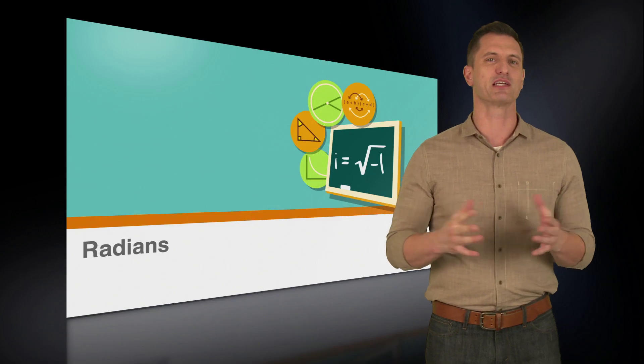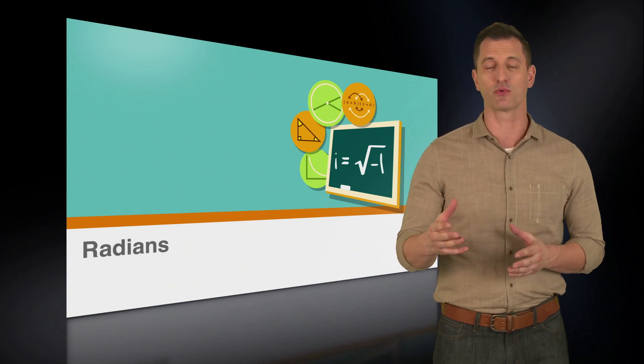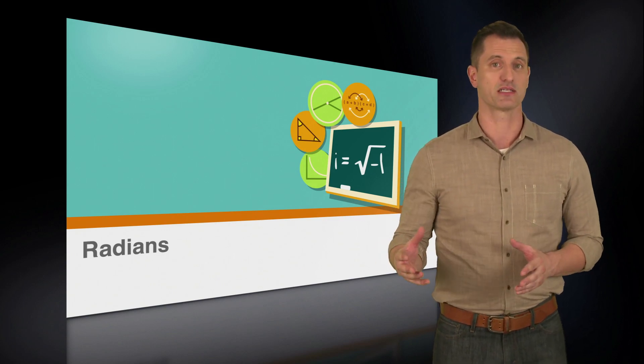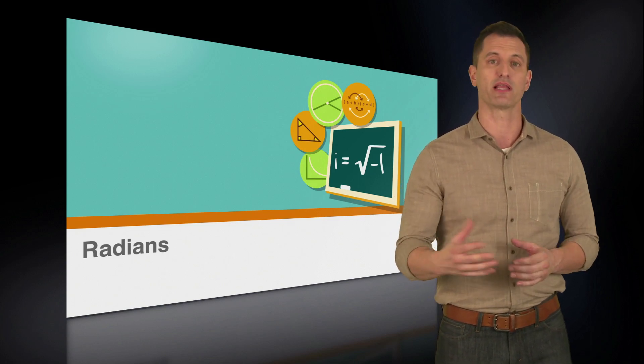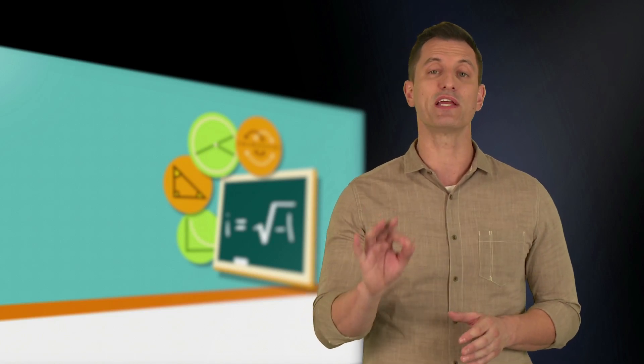You'll know you're dealing with a radians question if you see the word radian or radians. In other instances you'll see an angle but instead of a degree symbol it will be labeled with the letter pi. So if you see the word radian in a question or the letter pi marking an angle there are two ways to approach it.